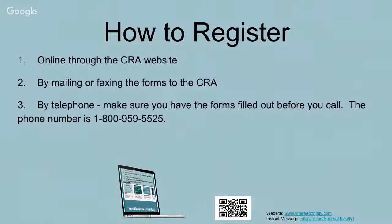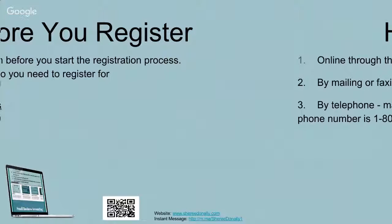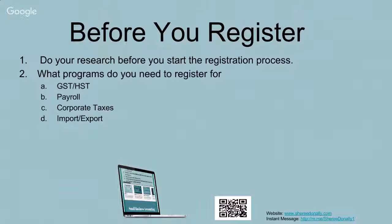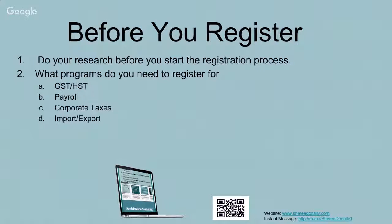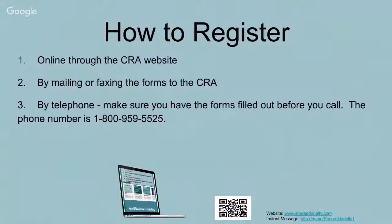To register for a CRA account, there are three different ways you can do it. You can go online through the CRA website and they will guide you through how to apply for the program online. Or you can do it by mailing or faxing the forms to the CRA. There are different forms for the different types of programs you're applying for — GST, payroll, corporate, import/export taxes — so you need to have the right forms, fill them out, and send them to the CRA.